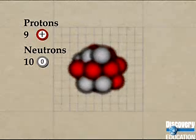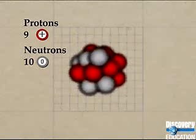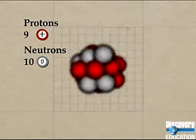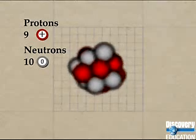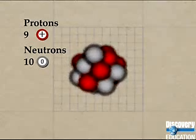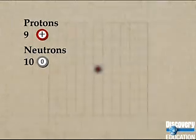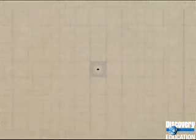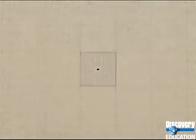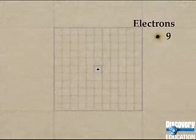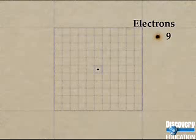Fluorine has nine negatively charged electrons to balance its nine protons. These electrons are found in two orbital shells surrounding the nucleus, which can be visualized as being built up from the nearest preceding noble gas, helium.